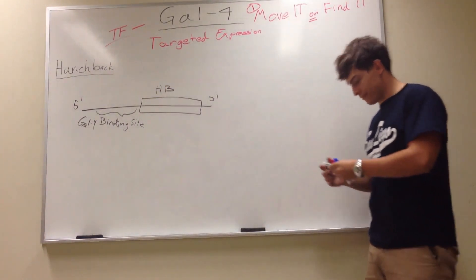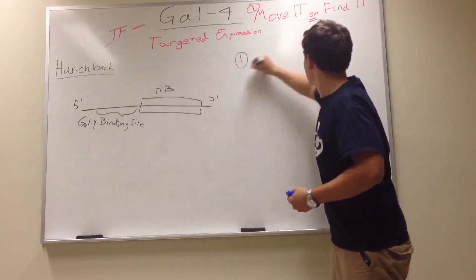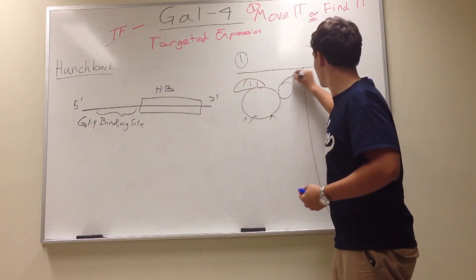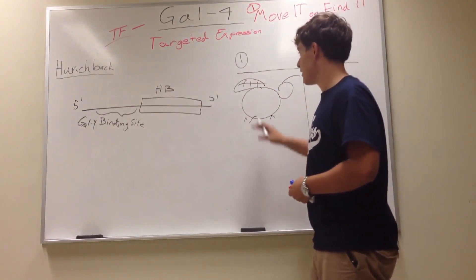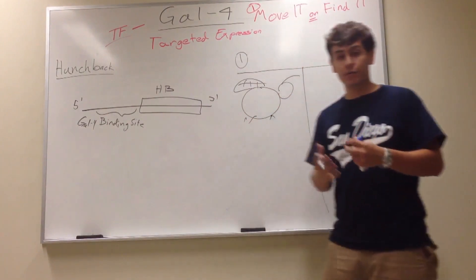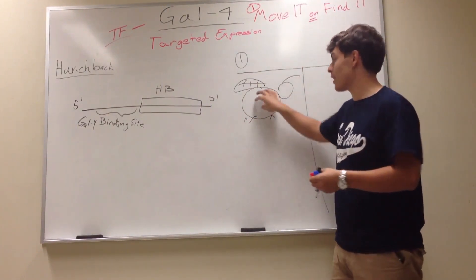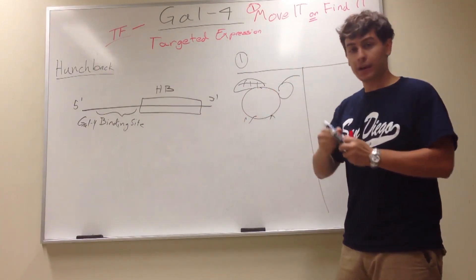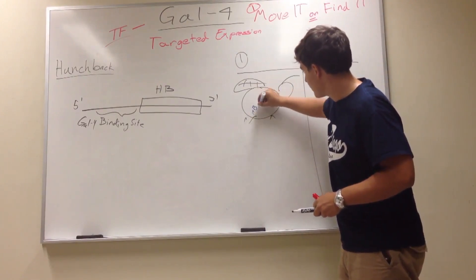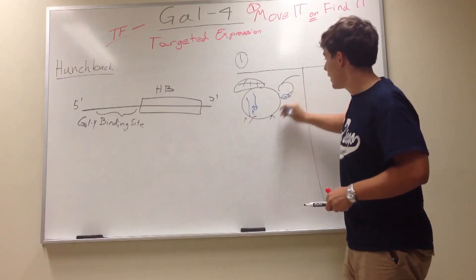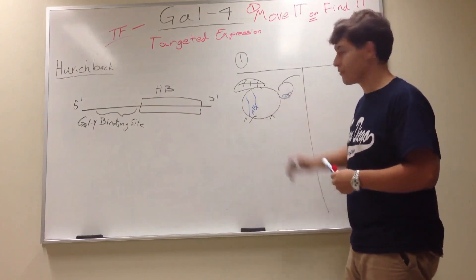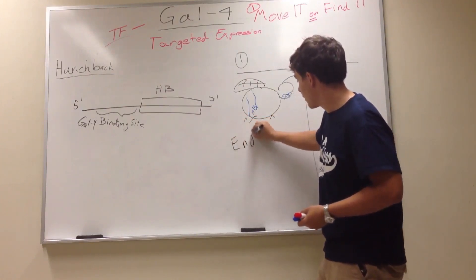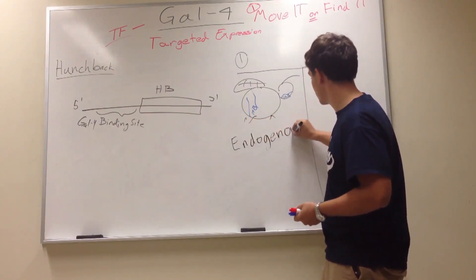Now there are two different ways this event could happen. One is where the fly has endogenous GAL4. GAL4 is expressed in flies, but not universally, not everywhere. So if we insert this hunchback construct with the GAL4 binding site, it's only going to produce hunchback wherever GAL4 is usually present in the fly. Method one is putting in a hunchback construct that will be activated wherever there is endogenous GAL4.